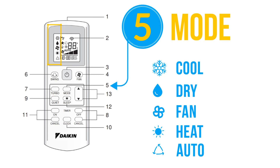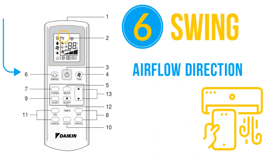To use automatic air swing, press the swing button. To distribute air in one direction, press the swing button and wait. Once the louver moves to your desired direction, press the button once again.